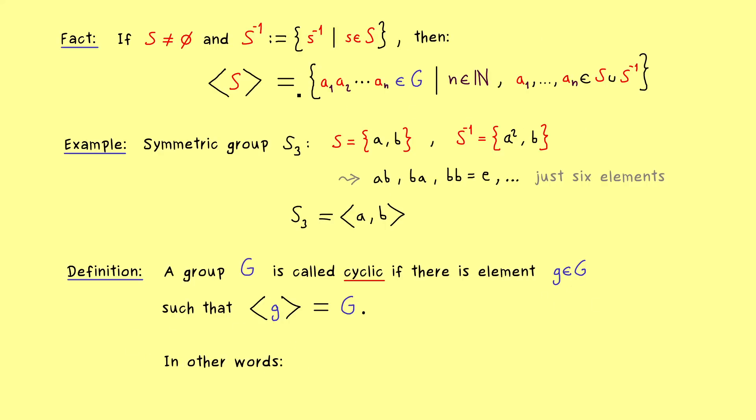And actually if we just have one element, this right hand side here is much simpler than the general case. Namely we just have a combination of g with g inverse. Therefore we can just write, take g to the power K, where K is an integer. Hence a positive integer describes the element g itself and a negative one its inverse.